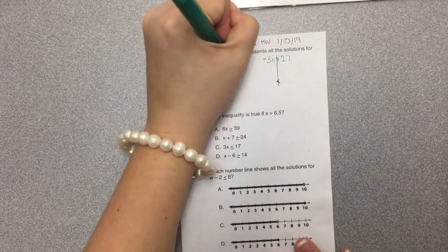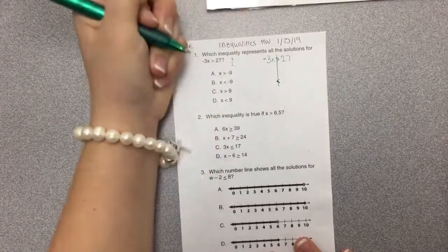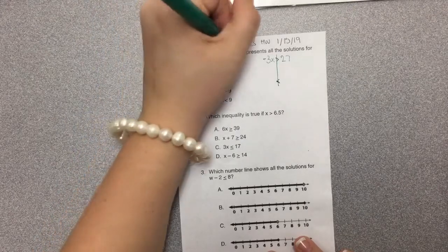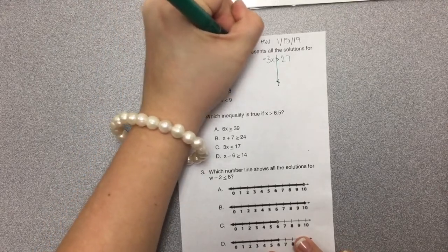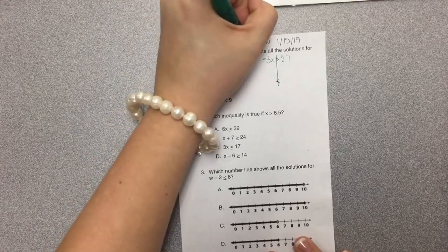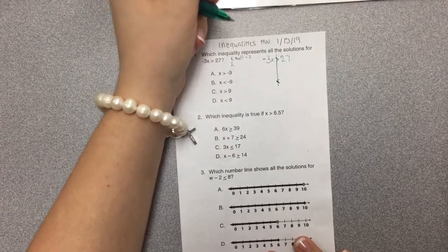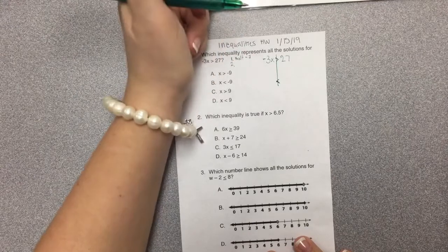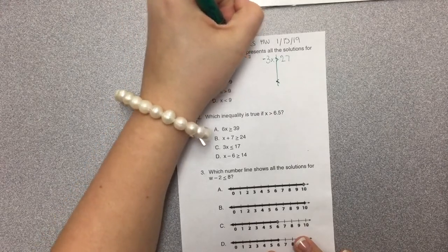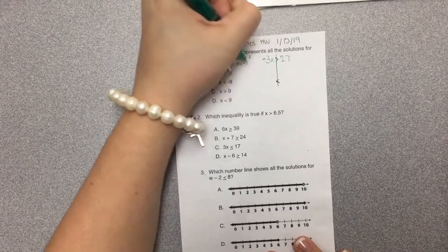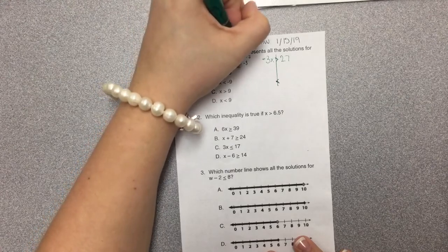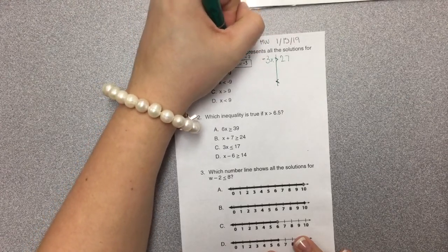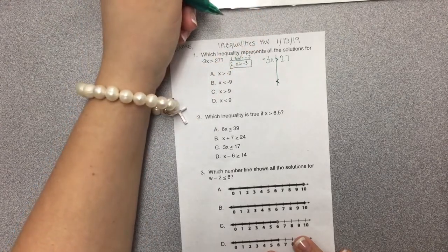Now we're going to do our one-twos. Number one, what's the operation? I'm multiplying by -3. So what's the opposite of multiplying by -3? Dividing by -3.